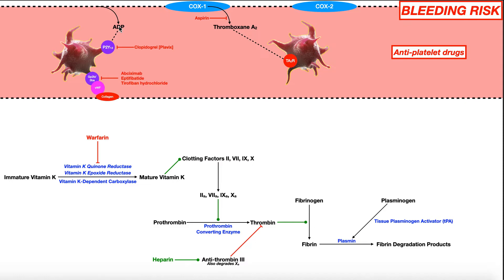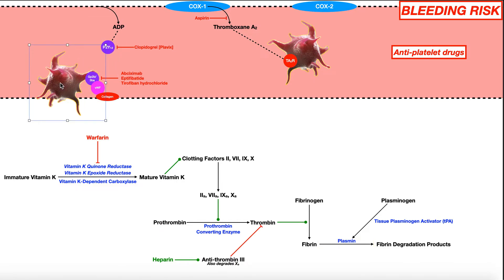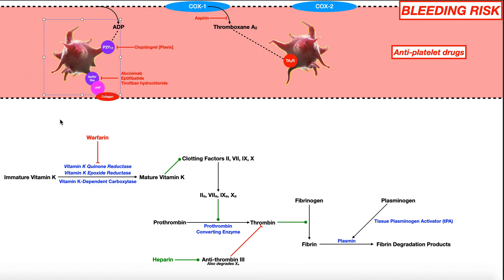ADP binds to another receptor on these platelets called the P2Y12 receptor. When ADP binds to this receptor, it does a similar thing to what thromboxane did — it causes that platelet to become sticky, start adhering to the vessel wall, aggregating with other platelets, and initiating the coagulation cascade. To prevent ADP from binding to this receptor and initiating platelet adhesion and aggregation, we can use clopidogrel, also called Plavix. This drug is going to inhibit this receptor, block ADP from binding, so the platelet can't activate and more or less remains dormant in the blood.